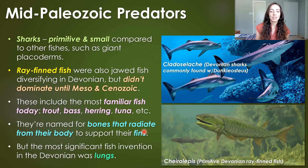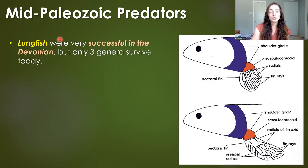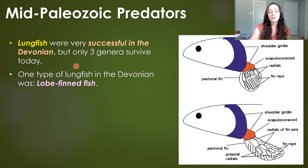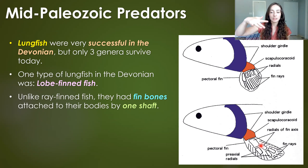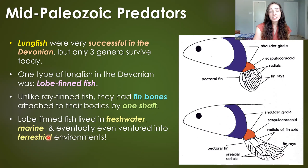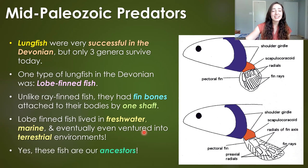Even with all these different fish types diversifying in the Devonian, the most significant adaptation was lungs. Lungfish were very successful in the Devonian, but only three genera survive today. One type of lungfish of particular interest was the lobe-finned fish. Unlike ray-finned fish with radial bone organization, lobe-finned fish had fin bones connected to the body by a single shaft with more bones in the hand-like area. They lived in freshwater and marine water and eventually ventured into terrestrial environments. These lobe-finned fish are our ancestors.